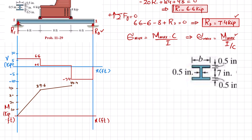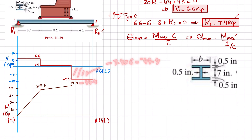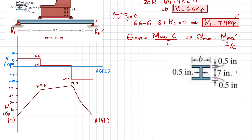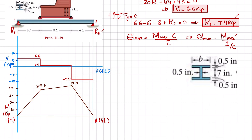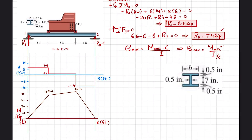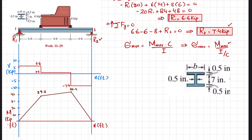The third area is minus 7.4 multiplied by 6, which equals minus 44.4. So plus 44.4 and minus 44.4 brings the bending moment back to zero. Since shear is a horizontal line, the bending moment is one degree higher — a straight line — and because the area is negative, the slope is decreasing.